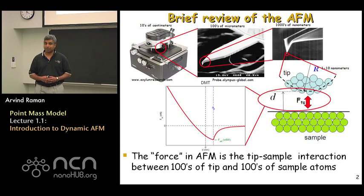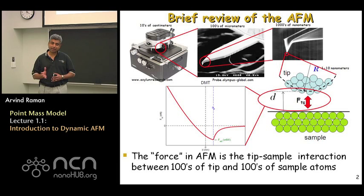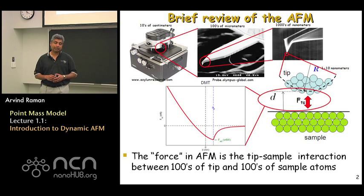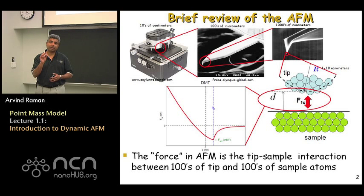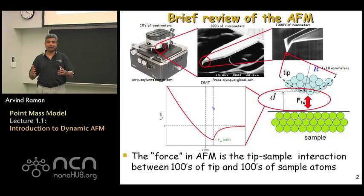Before we get started talking about dynamic atomic force microscopy, I would like to do a brief review of some concepts from Part One to see how they seamlessly come together with the content of this part. On the top left is shown a commercial atomic force microscopy instrument. Most AFM instruments consist of a scanner that scans the AFM probe relative to the sample, a sample holder, and a head. The head contains a place to mount a chip containing the AFM probe. This chip has a cantilever with a sharp tip at the very end of it.